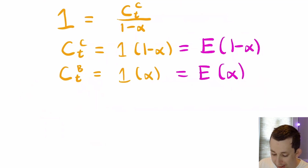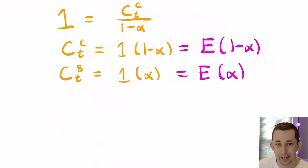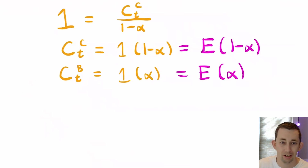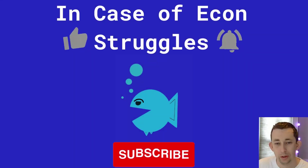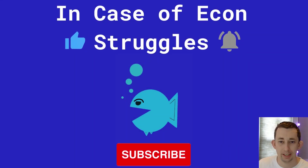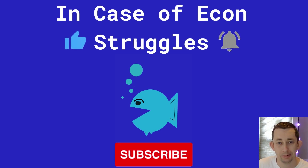I want to point out that there are no prices anywhere in this problem — not in the setup, not in the solution. When solving a social planner problem, you should not have any prices at all. If prices are cropping up in your Pareto optimal allocations problem, you are doing something incorrect. The biggest difference between solving a social planner problem and something like an Arrow-Debreu equilibrium is the lack of prices. Hopefully this helps you better understand the social planner problem. Make sure to like and subscribe and we'll see you next time.